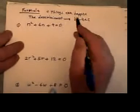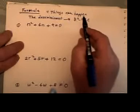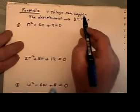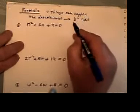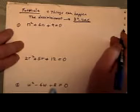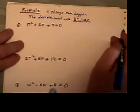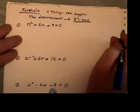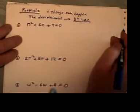With the quadratic formula, there are four things that can happen. They all involve what we call the discriminant, which is the b squared minus 4ac part, which appears underneath the square root sign in our formula.